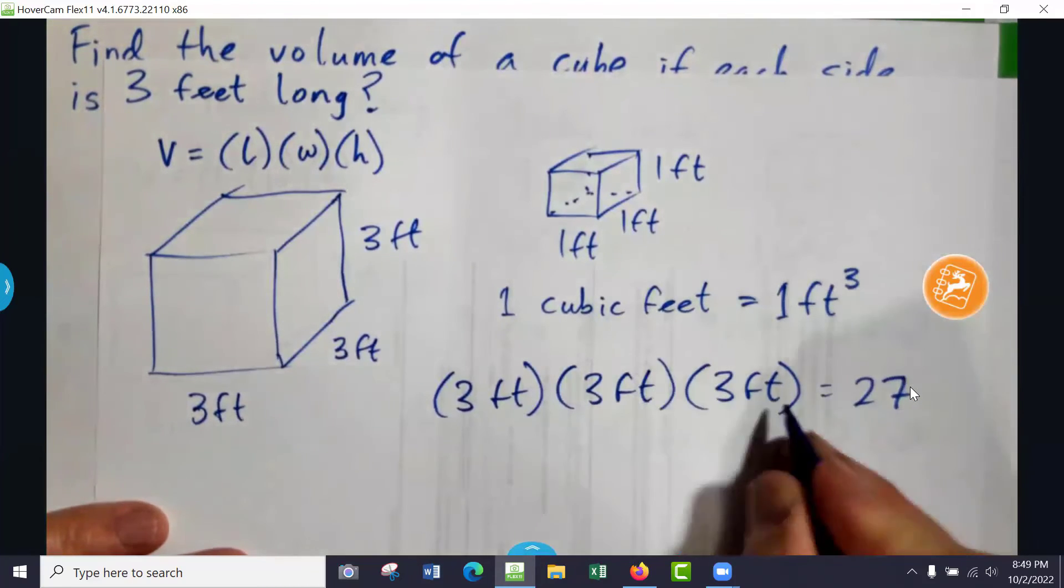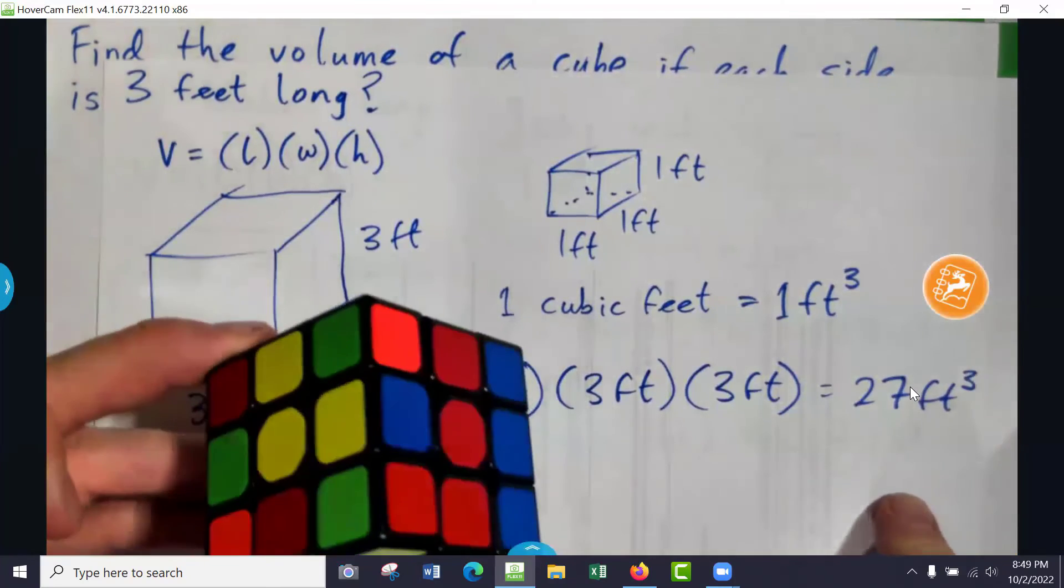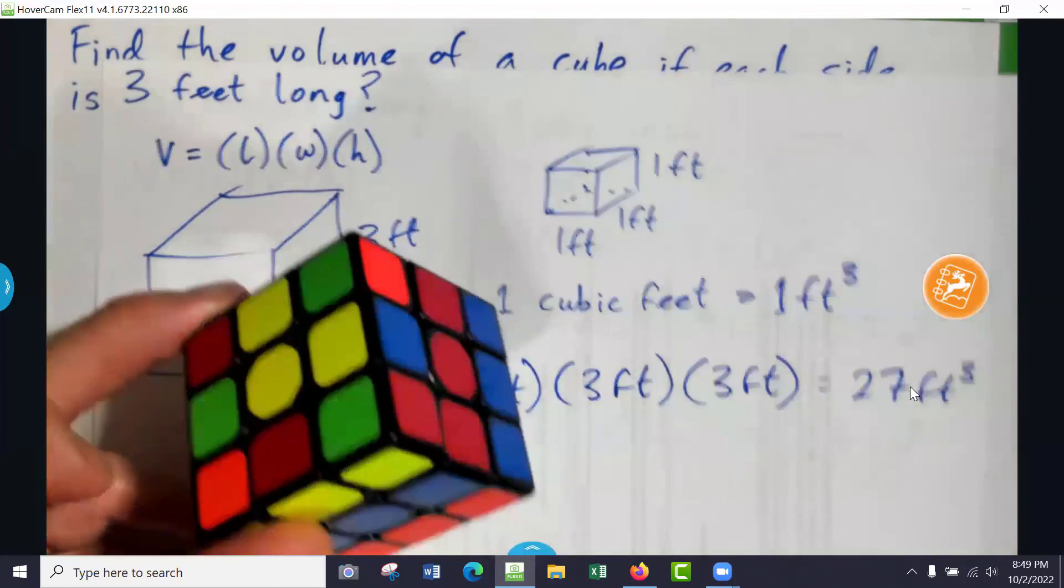And feet times feet times feet is feet cubed, or cubic feet. So, 27 little cubes make up the big cube, basically.